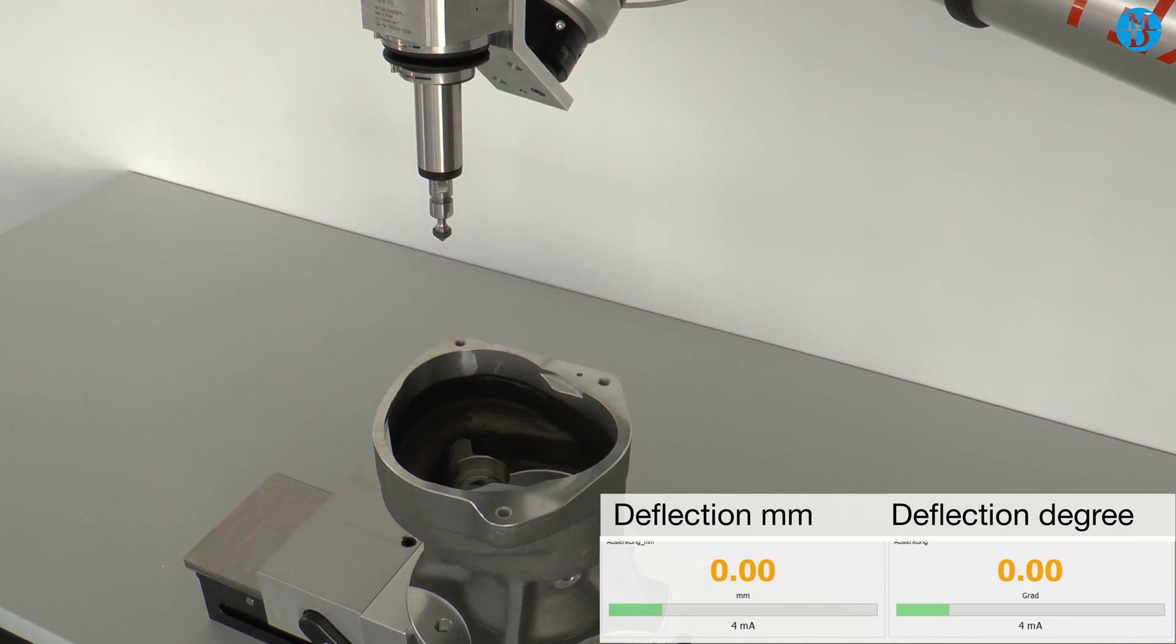Whilst deburring, the V-Spin has logged all data, which means we have a complete data log of what occurred during the deburring. We have the deflection data, we have the speed data, and I can evaluate this data to determine if we can further optimize the working of the spindle.